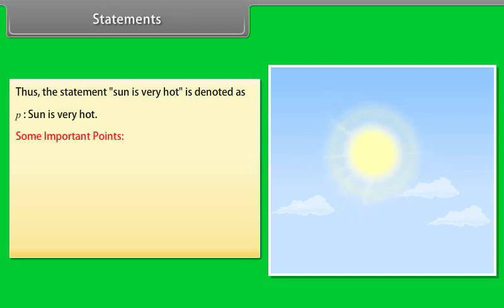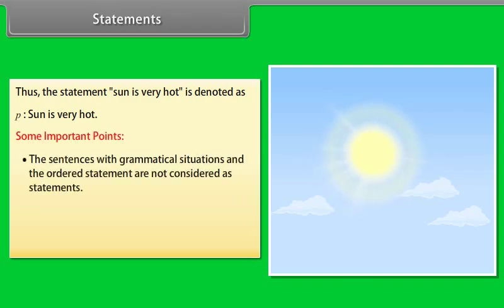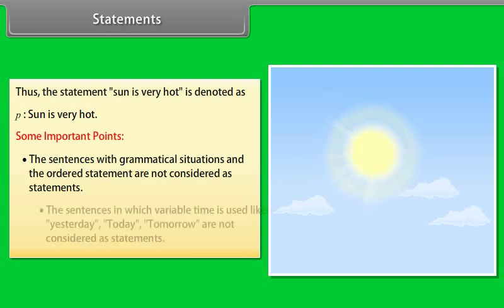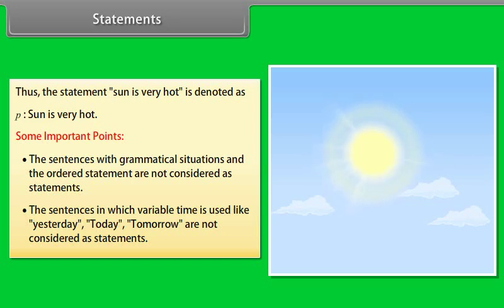Some important points: sentences with grammatical ambiguities and disordered statements are not considered as statements. Sentences in which variable time is used, like yesterday, today, or tomorrow, are not considered as statements.